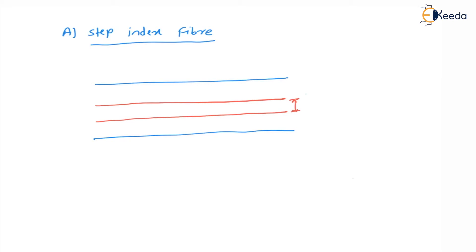Let the refractive index of the core be mu1 and that of the cladding be mu2. In step index fiber, the refractive index of the core is constant, but in the case of graded index fiber, the refractive index varies.